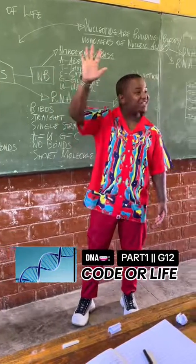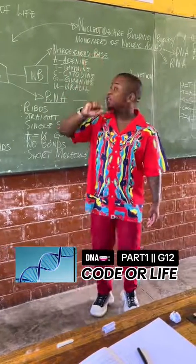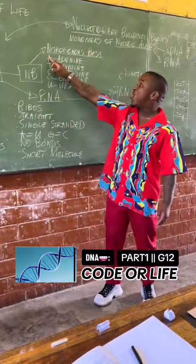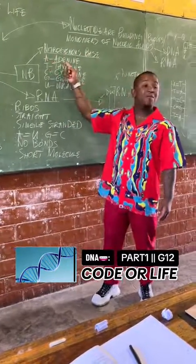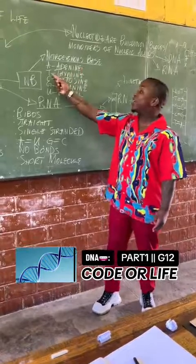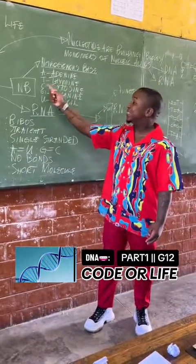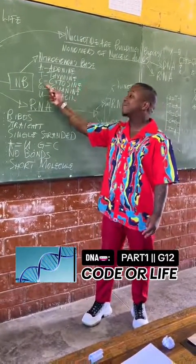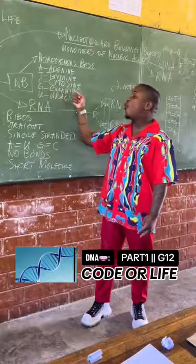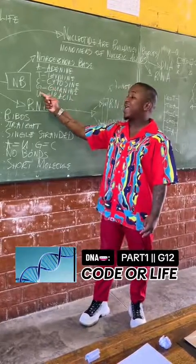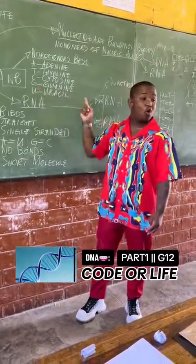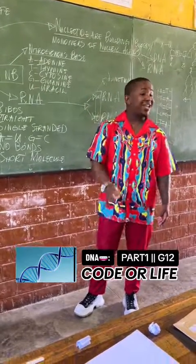We have five types of nitrogenous bases. A stands for adenine. T stands for thymine. C stands for cytosine. G stands for guanine. And U stands for uracil.